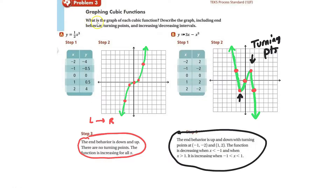Problem three is about graphing cubic functions — sketch the graph of each cubic function and describe it, including end behavior, turning points, and increasing and decreasing intervals. We have a cubic function that behaves increasing from left to right throughout the whole interval from negative infinity to positive infinity. The points are (−2, −4), (−1, −0.5), (0, 0), (1, 0.5), and (2, 4). There are no turning points because there's no change in direction. The end behavior is down as x approaches negative infinity, and up as x approaches positive infinity.